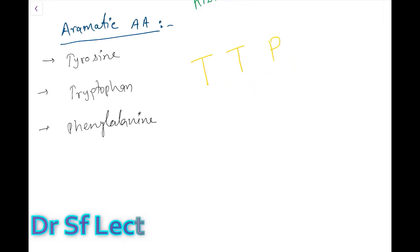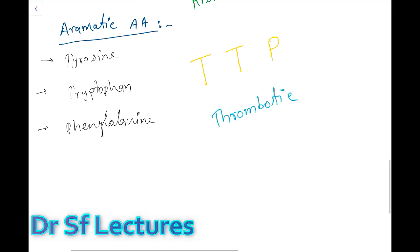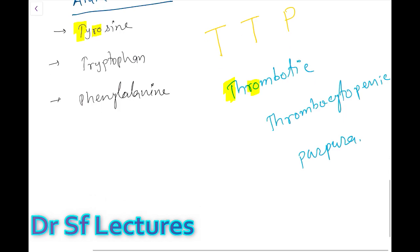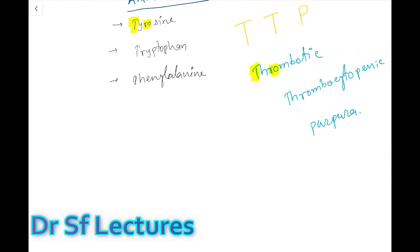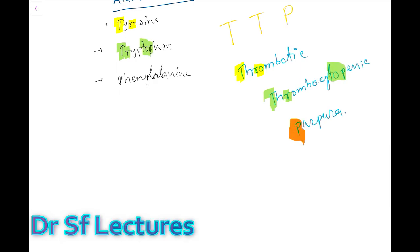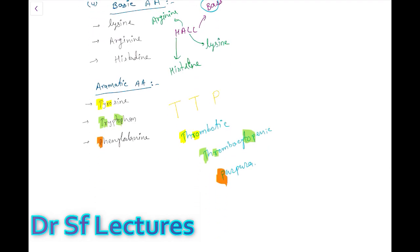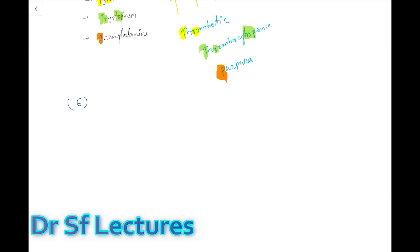In TTP: T is for tyrosine, corresponding to 'thrombotic'; T is for tryptophan, corresponding to 'thrombocytopenic' — notice similar letter patterns 'T-R-O-P'; and P is for phenylalanine, corresponding to 'purpura.' If you practice this, it will become easy to remember.